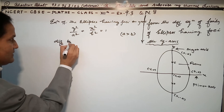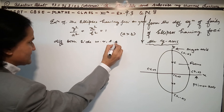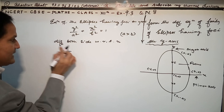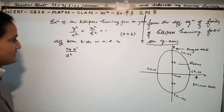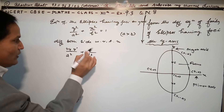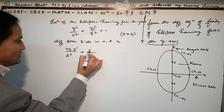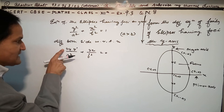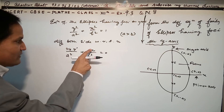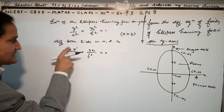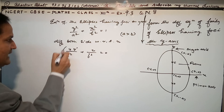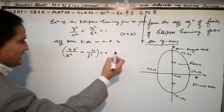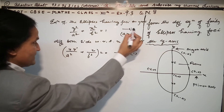Differentiating both sides with respect to x: 1/a² is constant so it comes out, and differentiating y² gives 2y·(dy/dx). I will take the factor of 2 to the other side. This gives us equation 1 and equation 2.